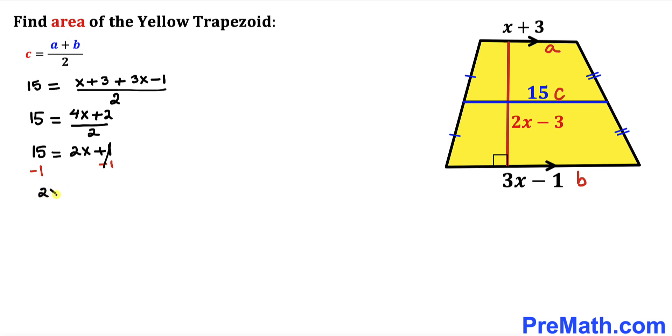So therefore we got 2x equals 14. Therefore our x value turns out to be 7.